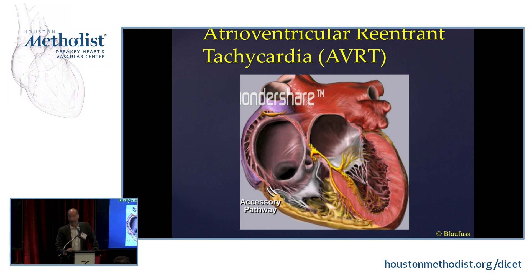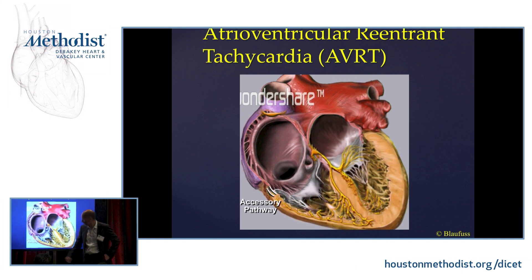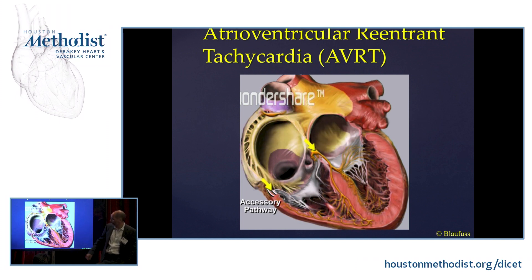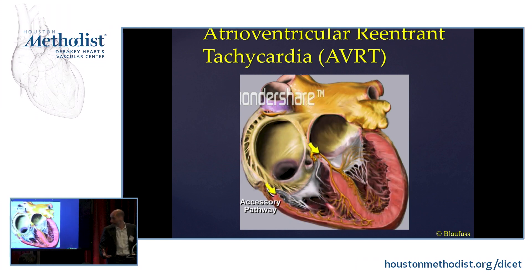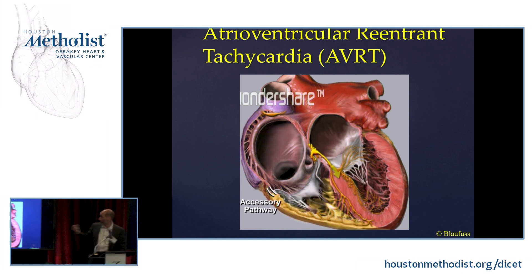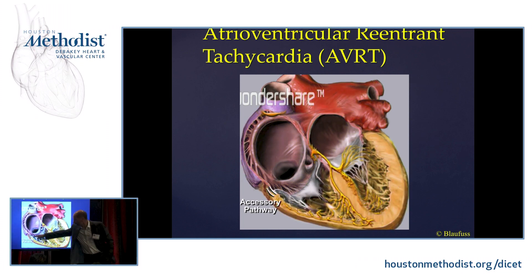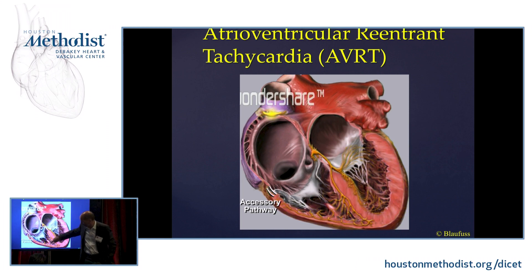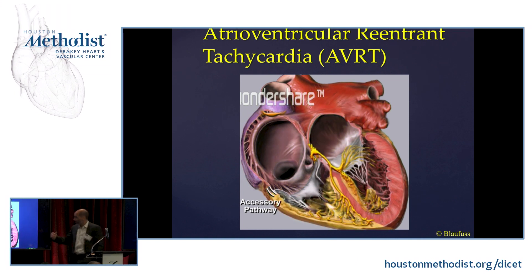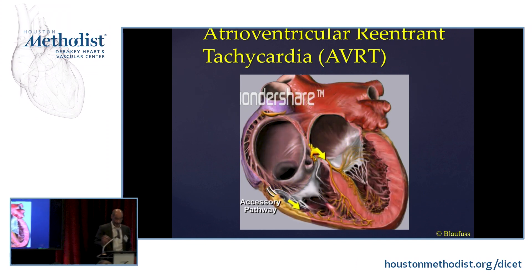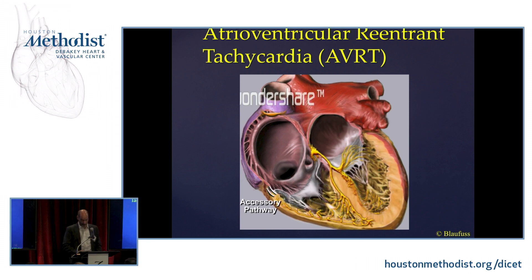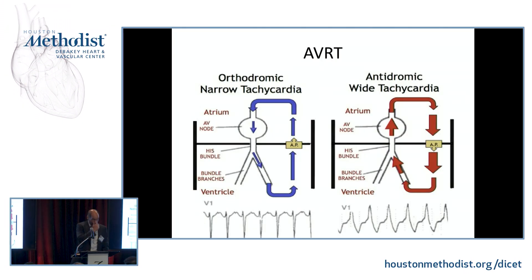AVRT is a situation where you have an accessory pathway. In sinus rhythm, electricity activates through both, generating a fusion beat — the delta wave — which has a signature on the EKG. When you get a PAC, it may block in the accessory pathway and go only down the AV node and then back up the accessory pathway — that is orthodromic reentry. Or it will block the AV node and go down the accessory pathway, producing a very wide QRS with retrograde conduction through the AV node back up to the atrium.